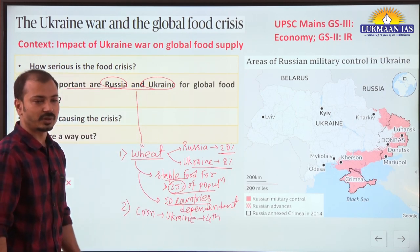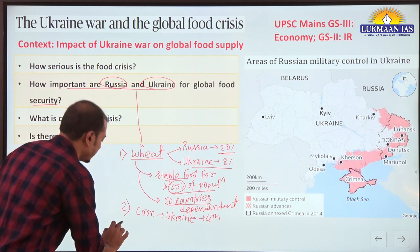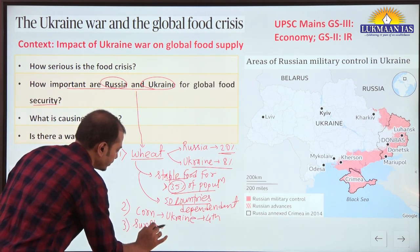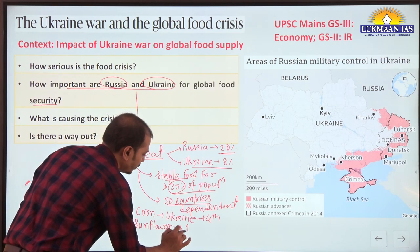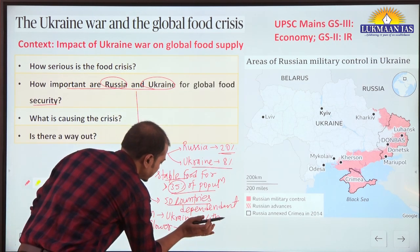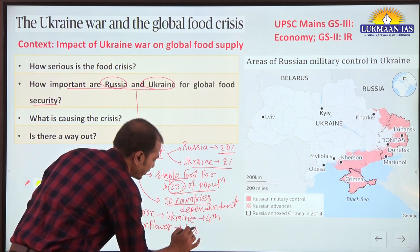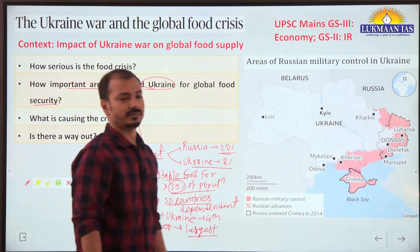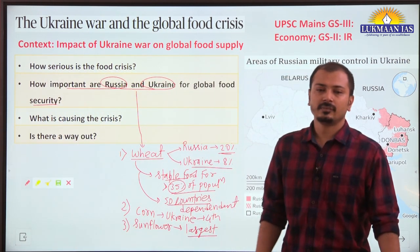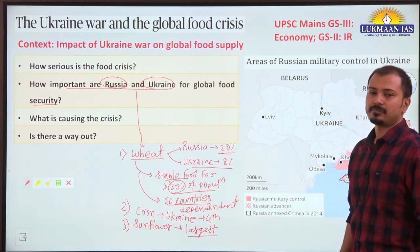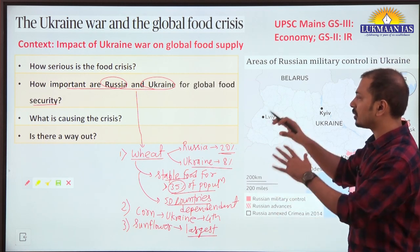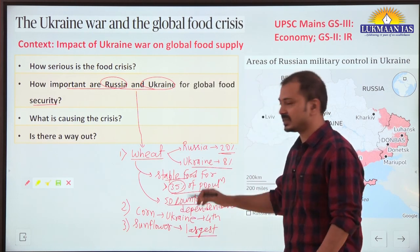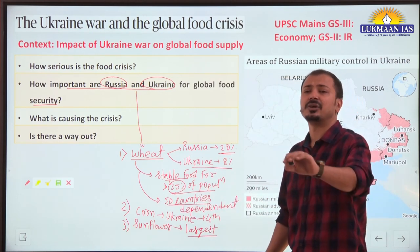Second, you should know about exports of corn. Ukraine is the fourth largest exporter of corn. Third, you should know about sunflower - Ukraine is the largest exporter of sunflower. When we talk about global food security, these two countries are important from these aspects. Write these facts in your answer exactly.